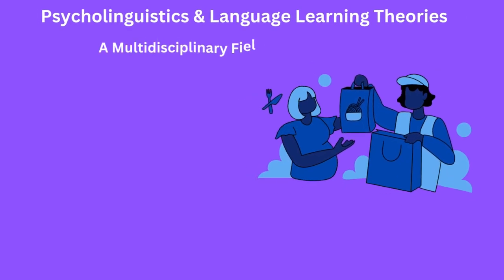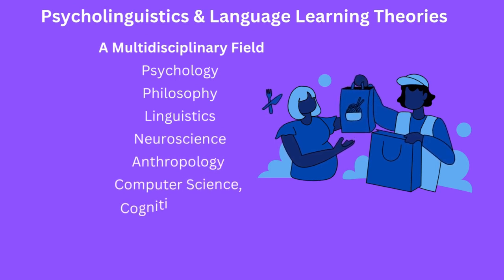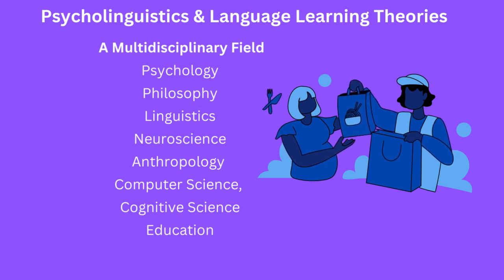Psycholinguistics is a combination of multiple fields. It focuses on the psychological and neurological processes involved in language and draws on research from cognitive psychology, neuroscience, and speech and hearing sciences. Philosophy plays a role by providing a theoretical framework for understanding the nature of language and meaning, examining the relationship between language and thought, the nature of meaning, and the structure of sentences. Linguistics provides the framework for psycholinguistics and has contributed to our understanding of the structure of language, including phonetics, phonology, morphology, syntax, and semantics.